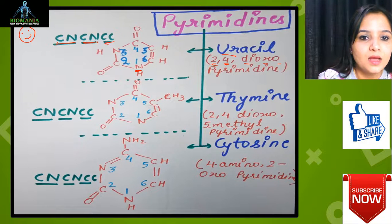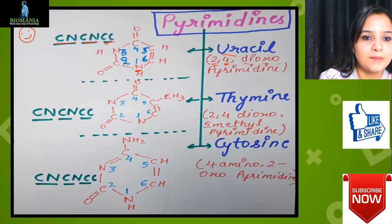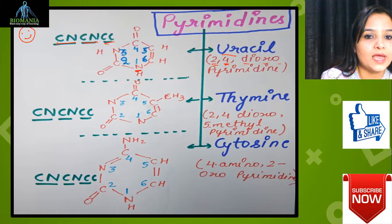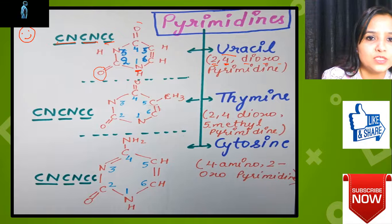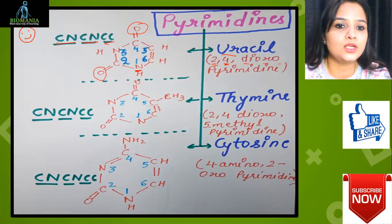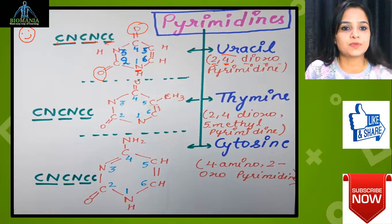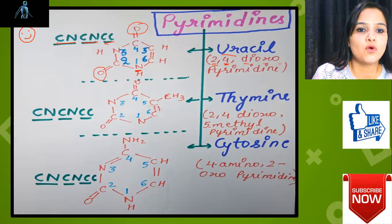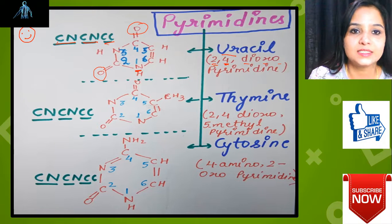Starting from nitrogen: first position is nitrogen, second carbon, third nitrogen, fourth carbon, fifth carbon, sixth carbon. For 2,4-dioxo, it means on the second position one oxygen atom is present and on the fourth position one oxygen atom is present. So its name is 2,4-dioxopyrimidine.